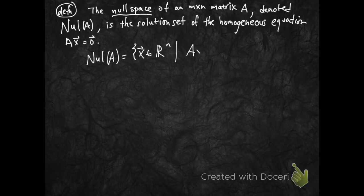So, null A, another way to say that, is the vectors x in Rn that satisfy A times x equals 0, the 0 vector.